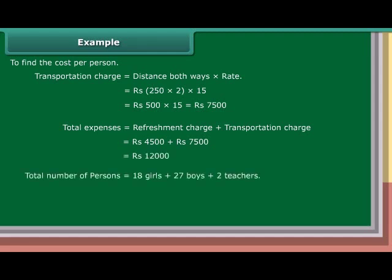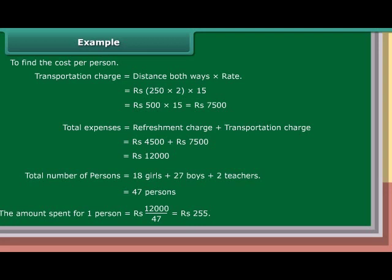Total number of persons equals 18 girls plus 27 boys plus 2 teachers, which equals 47 persons. The amount spent per person equals Rs. 12,000 upon 47, which equals approximately Rs. 255.